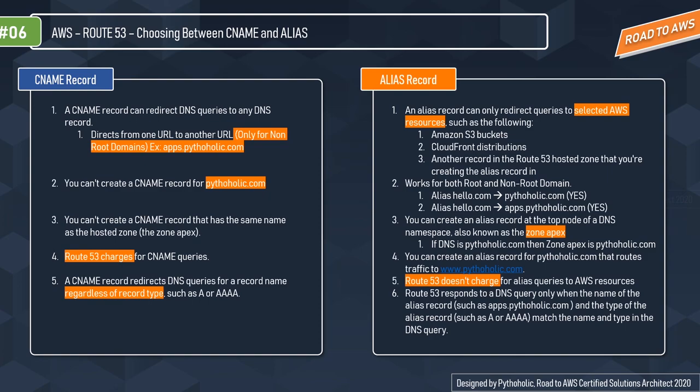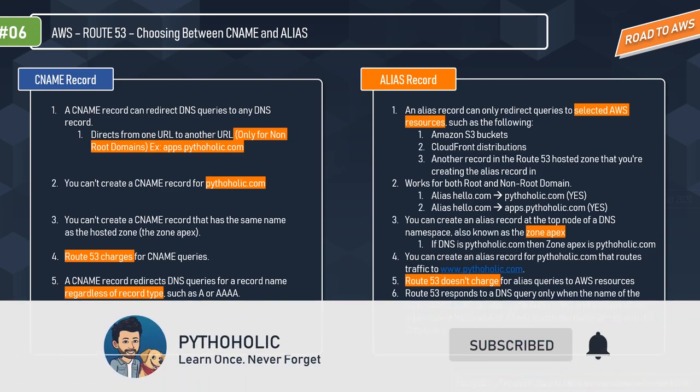You can create an Alias record at the top-level node of the DNS namespace, also known as the zone apex. So if your DNS is pytholic.com, the zone apex is pytholic.com, and you can create an Alias record for pytholic.com that routes traffic to www.pytholic.com. Route 53 does not charge for Alias queries to AWS resources. Route 53 responds to a DNS query only when the name and type of the Alias record — such as A or AAAA — match the name and type in the DNS query.